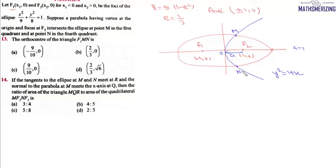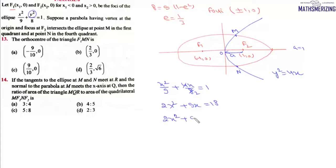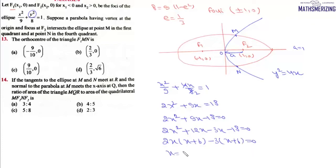To find points M and N, we solve the two equations simultaneously. Substituting y² = 4x into the ellipse equation gives x²/9 + 4x/8 = 1. This simplifies to 2x² + 9x - 18 = 0, which factors as (2x - 3)(x + 6) = 0. So x = 3/2 or x = -6. Since x = -6 is not possible (outside the ellipse), the only valid value is x = 3/2.